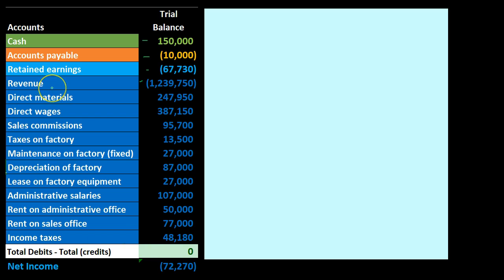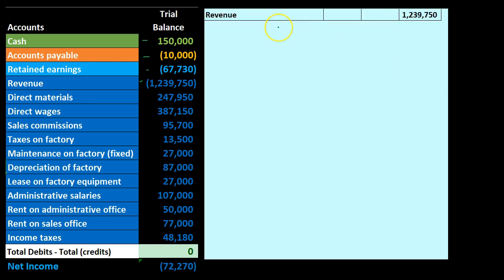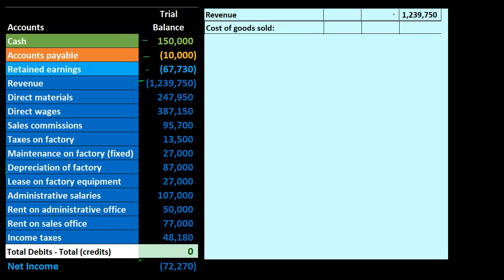We're going to take these numbers and put them into the structure of a standard financial statement income statement — something close to generally accepted accounting principles — and then compare and contrast that to a CVP or contribution margin income statement in future presentations. The income statement typically starts with revenue; for a manufacturing company it might be called sales. We pull over the revenue number, removing the credit and putting it in a plus-and-minus format on the outside column, since we'll be generating subtotals.